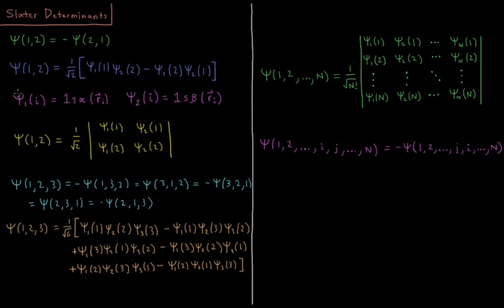So let's assume that we have orbital 1 holding electron i. Let's say that's 1s alpha, that's the 1s orbital with a spin-up electron. Let's say psi 2 is the 1s orbital with a spin-down electron, a beta electron. Then we can represent this function here in the following way.